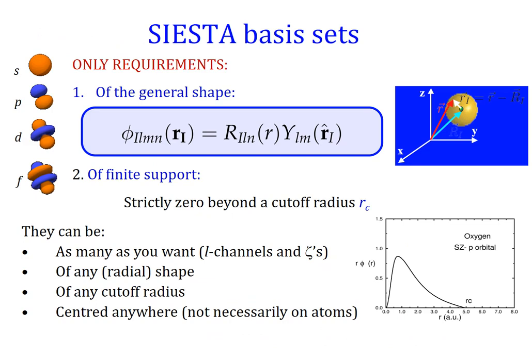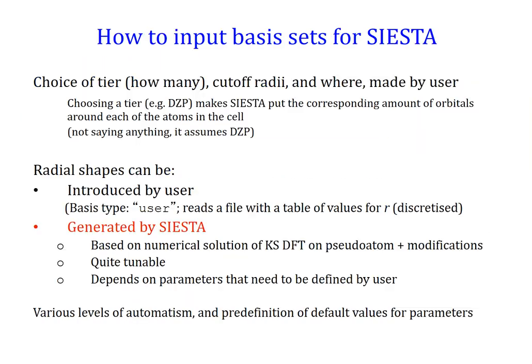Starting where we left off before, SIESTA basis sets have to be made of atomic-like orbitals of finite support. They can be as many as you want, wherever you want, and of any radial shape. Let's see what SIESTA can provide in order to generate good basis sets for you.